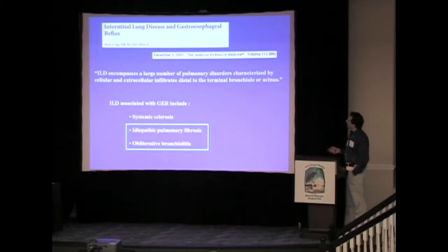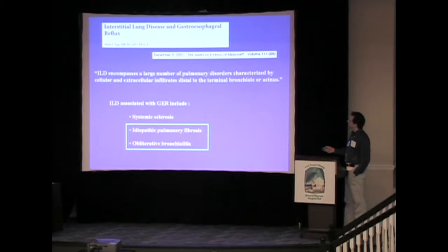Dr. Ng, in 2001, looked at the association of gastroesophageal reflux in all interstitial lung diseases in a review article, and identified that there is an association in three of them: ILD within systemic sclerosis, idiopathic pulmonary fibrosis, and obliterative bronchiolitis.